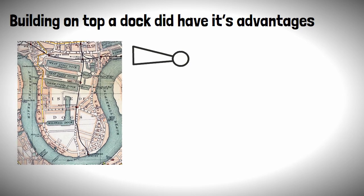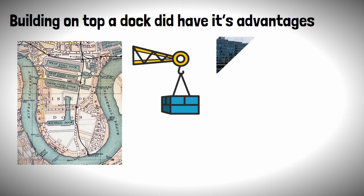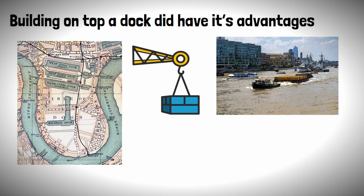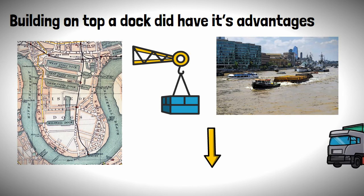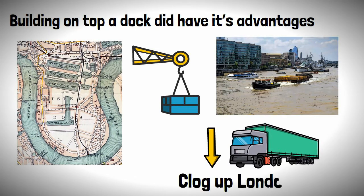Building on top of a dock had its advantages. Being right next to the Thames allowed for much of the construction and excess material to be carried out using barges, drastically reducing the amount of lorries required that would clog up London's roads.